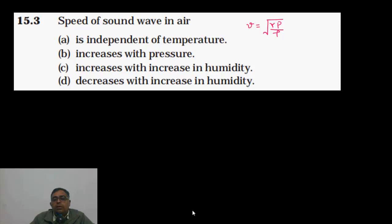यह आप कहें density of the dry air. तो अब आपसे यहाँ पे पूछ रहा है कि जो speed of sound in air है वो किन किन चीज़ों पे depend करती है. तो आप इसको यहाँ पे ऐसे भी लिख सकते हैं, gamma RT by M.